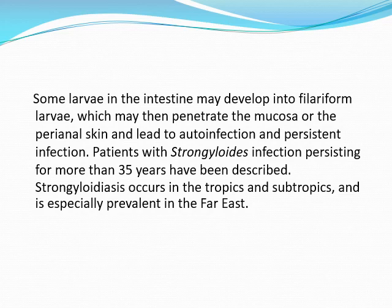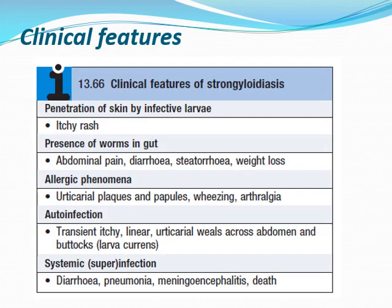Strongyloides occurs in the tropics and subtropics and is especially prevalent in the Far East. The main clinical features include: itchy rash due to skin penetration, epigastric pain and diarrhea and weight loss due to gut infestation, urticarial plaques and papules, wheezing as part of allergic phenomena, and transient itchy linear urticarial wheals across the abdomen and buttocks - similar to larva currens - as part of auto-infection because larvae embed deep into the skin.